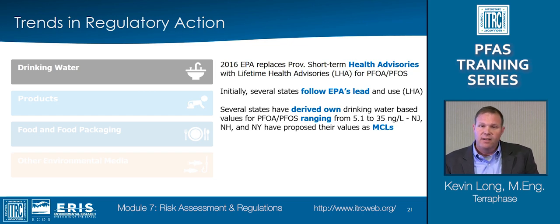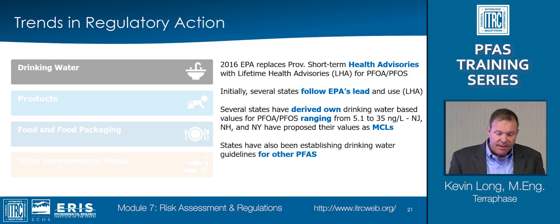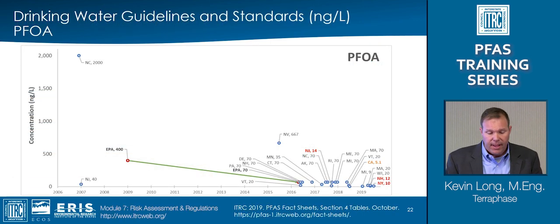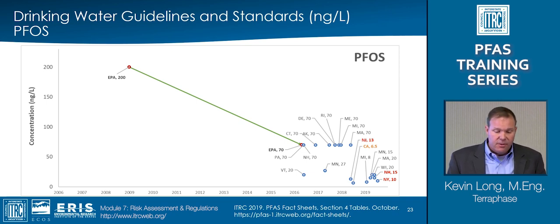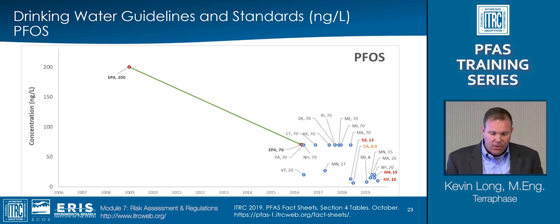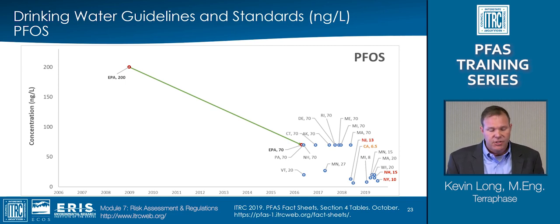As a side note, a law was signed in Vermont requiring the agency to set an MCL by 2020. Several states have also been working to establish drinking water guidelines for other PFAS. The trend in how guidelines for PFOA have emerged is illustrated here, with the lowest value being issued by California in 2018. A similar trend can be seen with PFOS values, also with California establishing the lowest value in 2018, and New Jersey, New Hampshire, and New York the only states to issue proposed values as MCLs. Overall, the trend has been downward over time, mostly due to the emergence of toxicological information, different interpretations in the toxicological science, and different exposure assumptions used by different agencies in deriving their values.